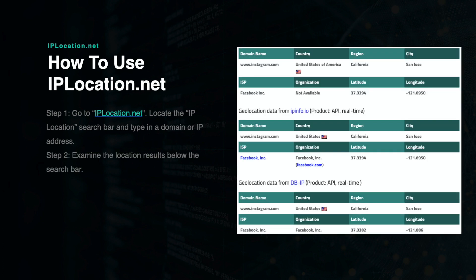You will first be shown the IP address of the website you searched for at the top in red. Then you will be shown a list of results showing the suspected geolocation of the website or IP address. It will show you the Internet Service Provider and the latitude and longitude location of the servers. The data will be sourced from multiple tools that IPlocation.net uses to gather its data.